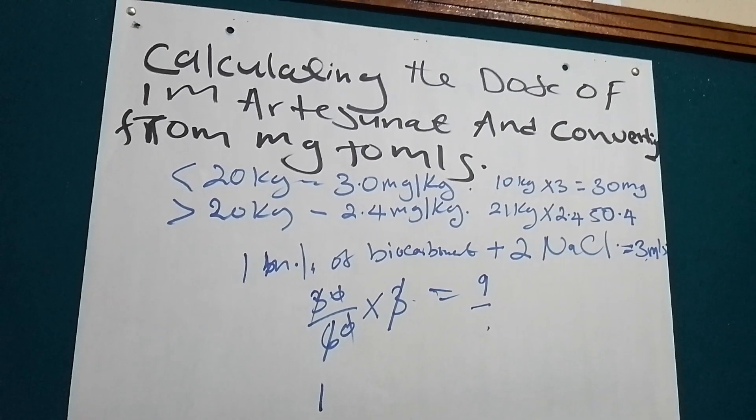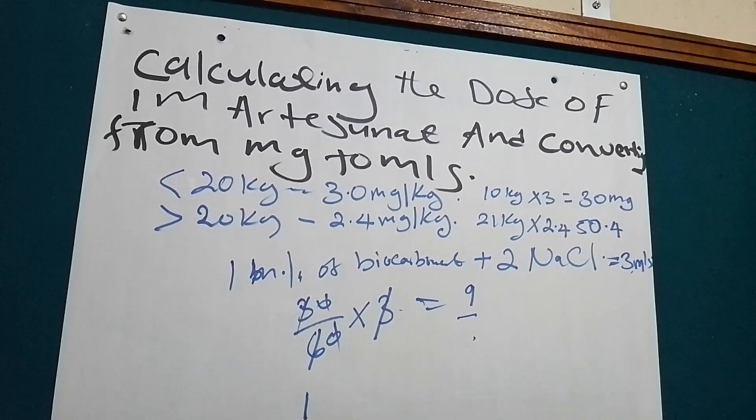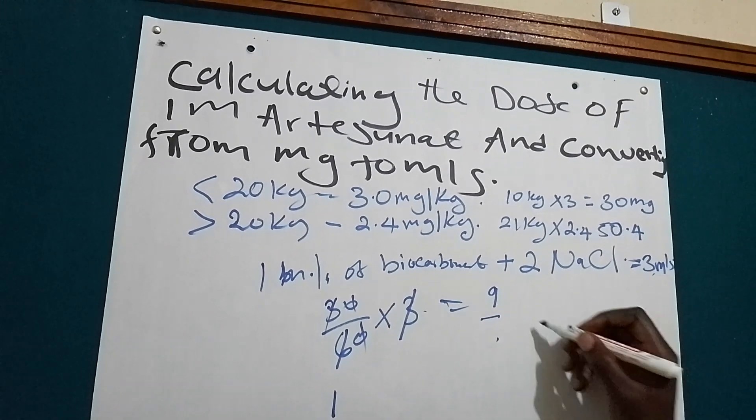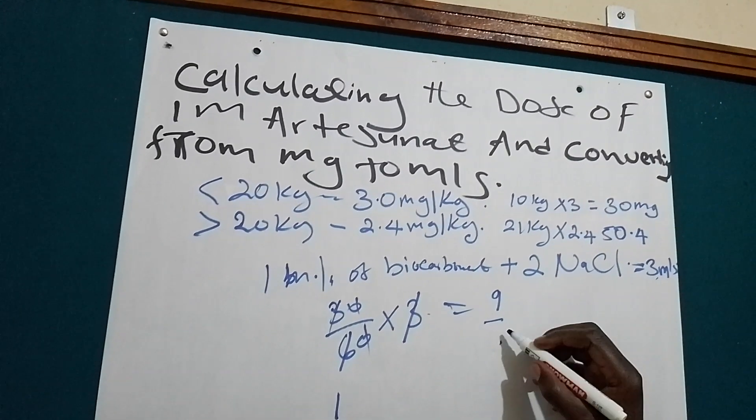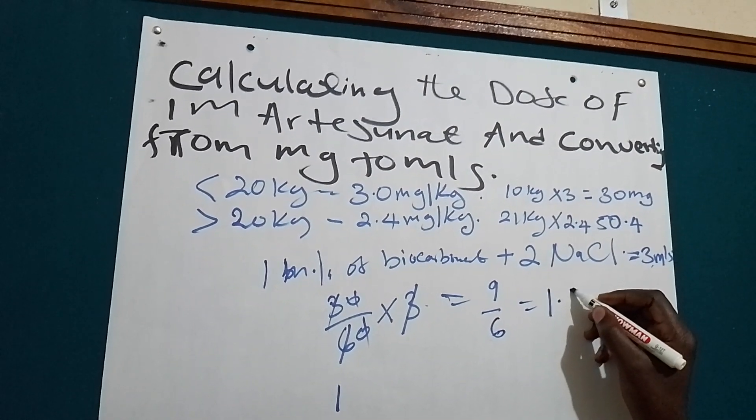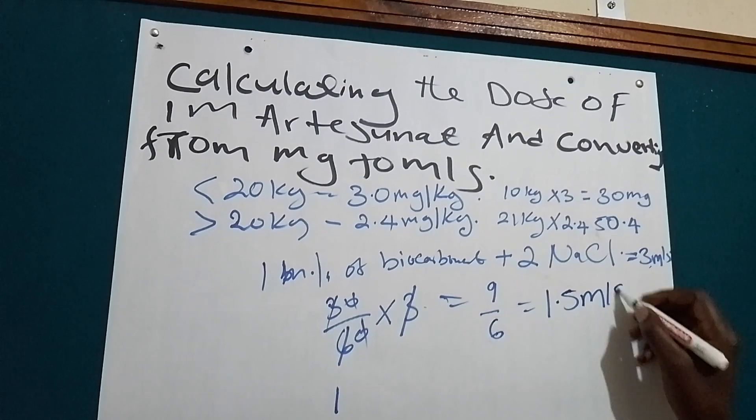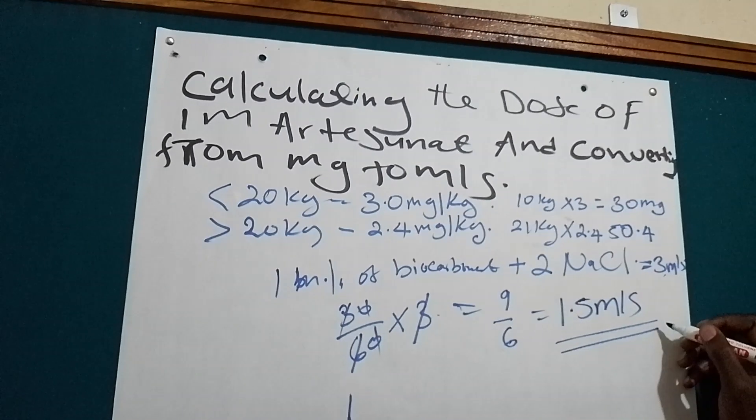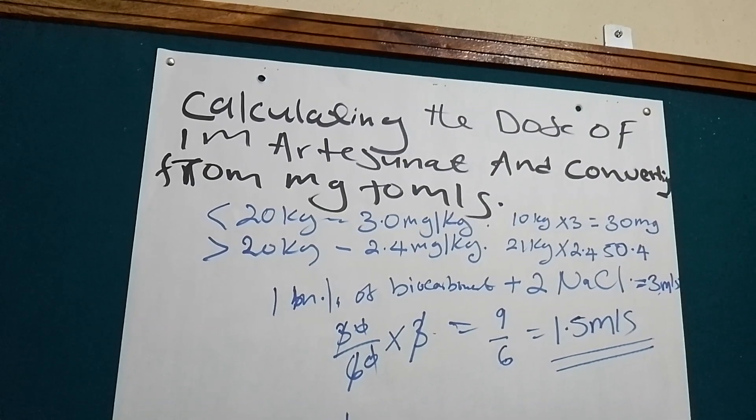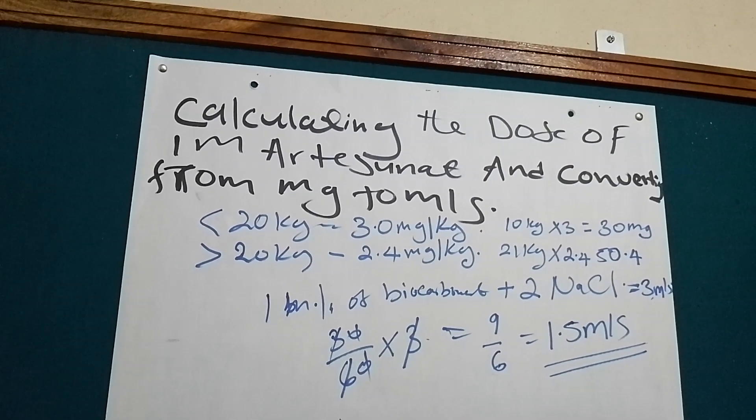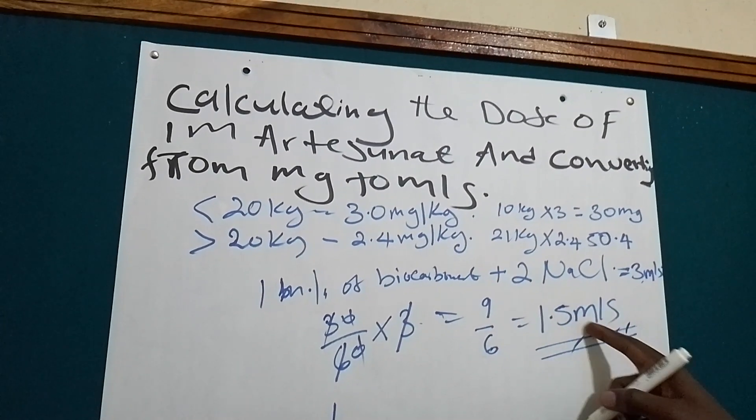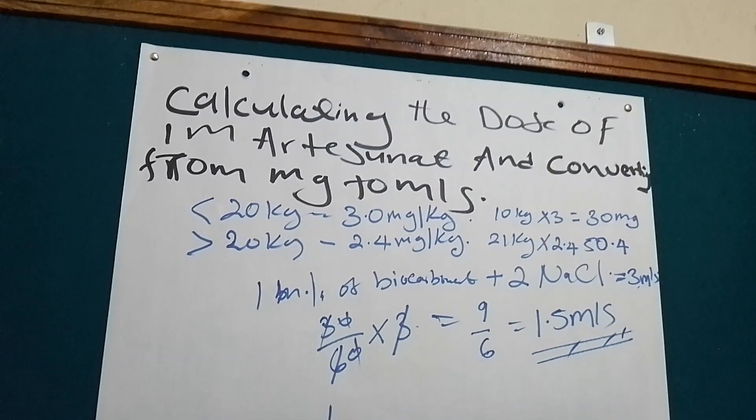30 divided by 60 times 3. What will we get? We will get 1.5 milliliters and this one we are going to give it IM. We are going to aspirate 1.5 milliliters and give it IM.